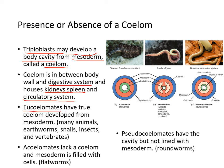Eucoelomates have a true coelom developed from mesoderm. Many animals like earthworms, snails, insects, and vertebrates are considered eucoelomates. Acoelomates, like the flatworm, have no body cavity — the coelom and mesoderm are filled with cells. Pseudocoelomates have a cavity but it's not lined with mesoderm; roundworms are an example of that.